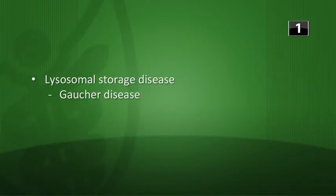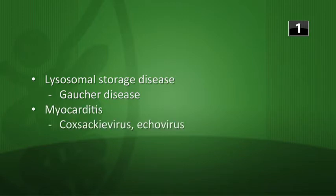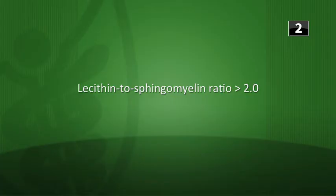Next, most common lysosomal storage disease is going to be Gaucher's disease. Most common cause of myocarditis is going to be Coxsackievirus or echovirus. Next, what amniotic fluid measurement is indicative of fetal lung maturity? This is the lecithin to sphingomyelin ratio of greater than 2.0.